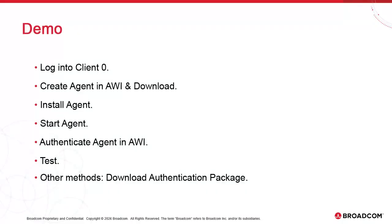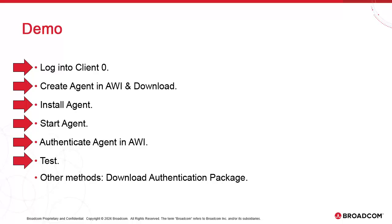Next we move to the deployment of the agent. There are several methods, and we will demo the simplest one, which requires no INI configuration. Customers log into client zero and create a new agent in the admin page of AWI. Then we select it and use the download feature to obtain the agent package. The package downloads with an INI file already configured for use with SaaS. The agent name matches the name of the agent we created, the system matches the system name as defined in ucsrv.ini, and the JCP connection is already set to the JCP endpoint URL. The authentication package is in the bin directory and referenced in the INI. We install the agent, start it, and in AWI re-authenticate the agent with the server. Finally, we add the agent to client 100 and run a test job.